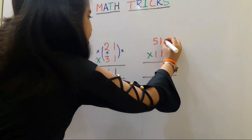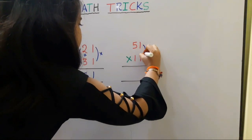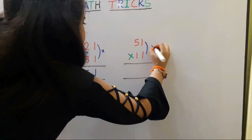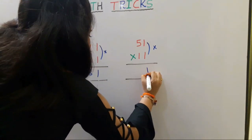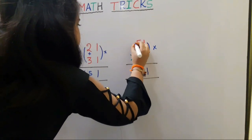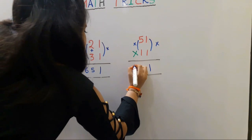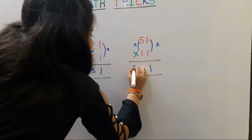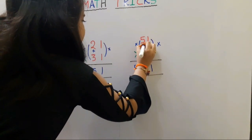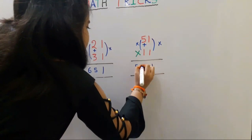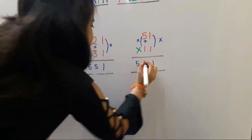Next sum. First we should multiply the 1's place: 1 1's are 1. Next we should multiply the 10's place: 5 1's are 5. Next we should add the 10's place: 5 plus 1 is equal to 6.